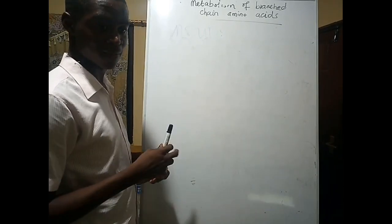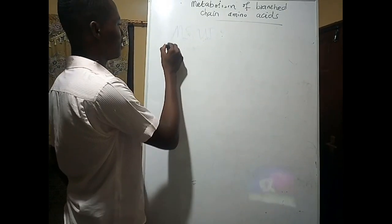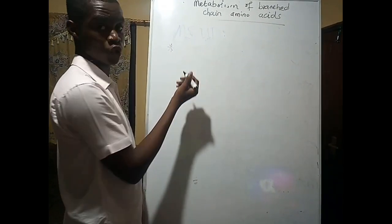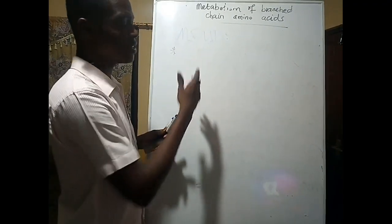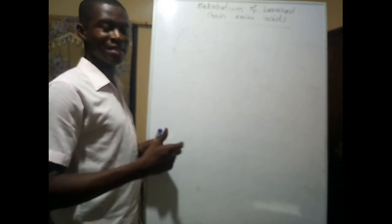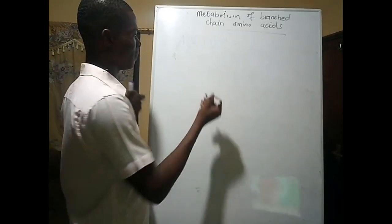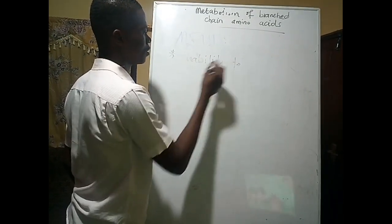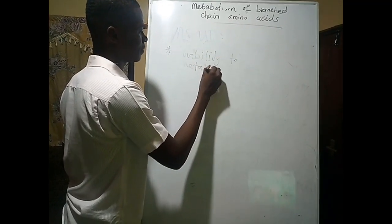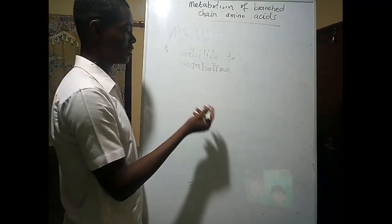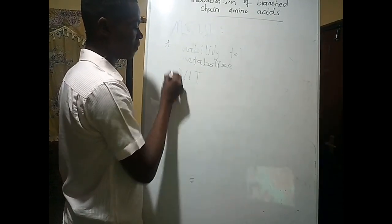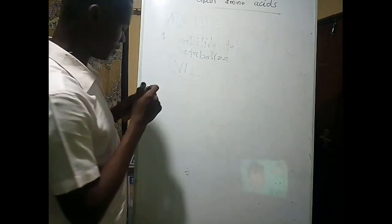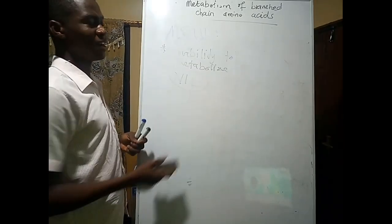Maple Syrup Urine Disease is so named because when you have this condition, your urine tastes like maple syrup or burnt sugar. You experience this medical condition when you are unable to metabolize the branching amino acids — valine, isoleucine, and leucine (VIL). This inability is due to the lack of alpha-keto acid dehydrogenase.